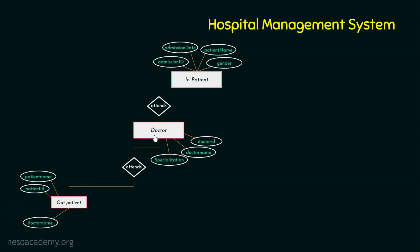Many doctors may be engaged with many outpatients, and that is why I am making it a many-to-many relationship. Now let's establish the relationship between the doctor and the inpatient entities. Here I made it one-to-many. The reason is a doctor may attend many inpatients, but an inpatient must have at most one doctor. This is my requirement here, though it need not be the requirement of all hospitals.